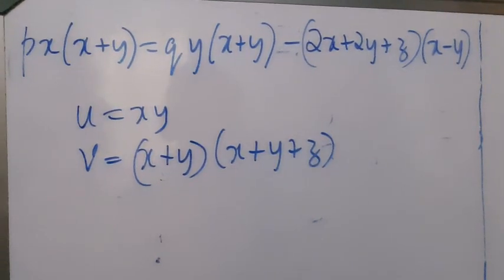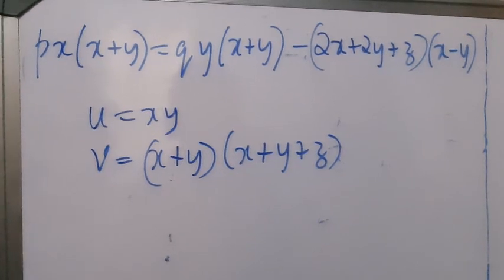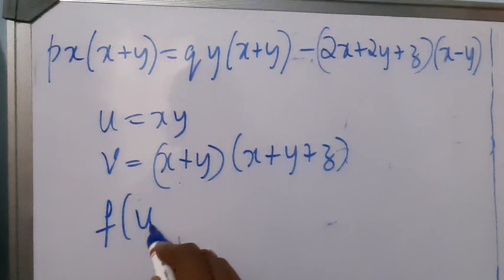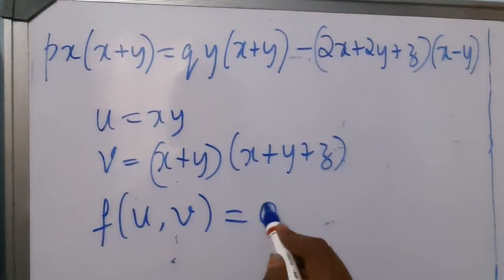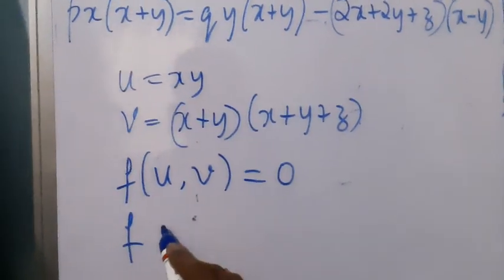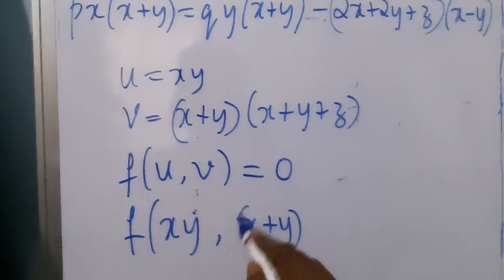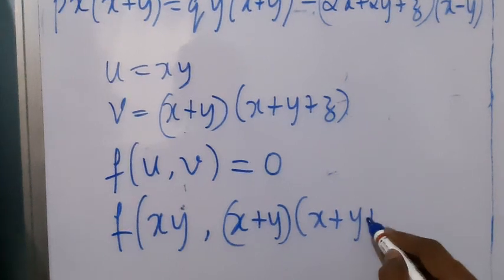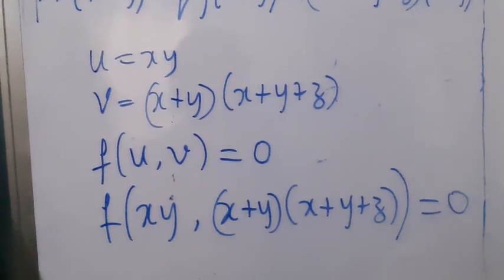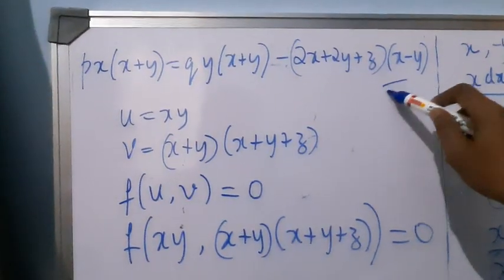So we choose V equal to (X+Y)(X+Y+Z), and U equal to XY. Since the solution of the PDE is f(U, V) equal to 0, we write f(XY, (X+Y)(X+Y+Z)) equal to 0, which is the general solution of the given PDE.